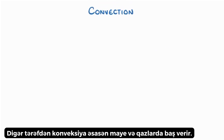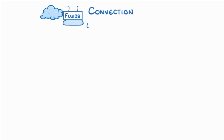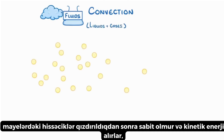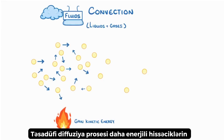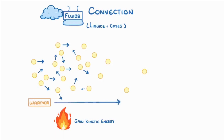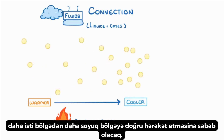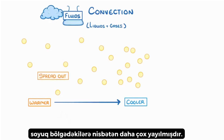Convection, on the other hand, occurs mainly in fluids — and remember, fluids can refer to anything that can flow, so both liquids and gases. Because the particles in fluids aren't fixed, once they're heated and they gain kinetic energy, they all move around faster. By the process of random diffusion, this will cause these more energetic particles to move away from the warmer region towards the cooler region, meaning the higher energy particles in the warmer region are a lot more spread out than those in the cooler region.